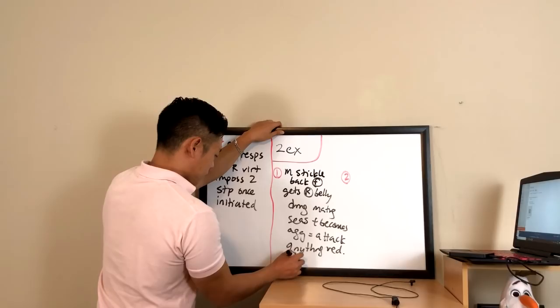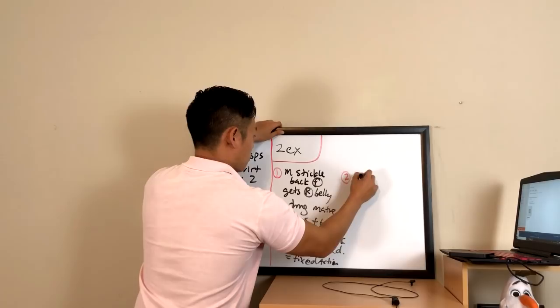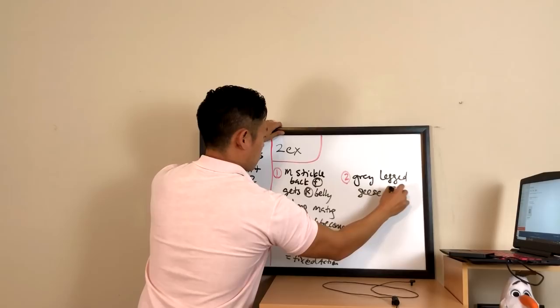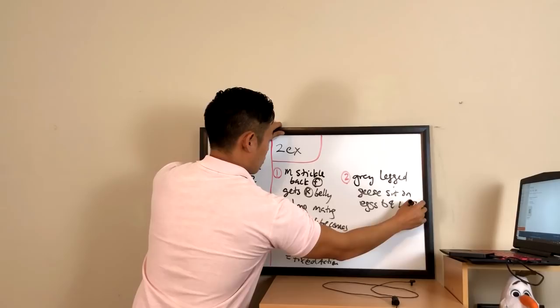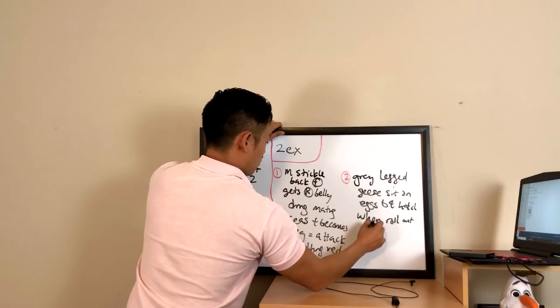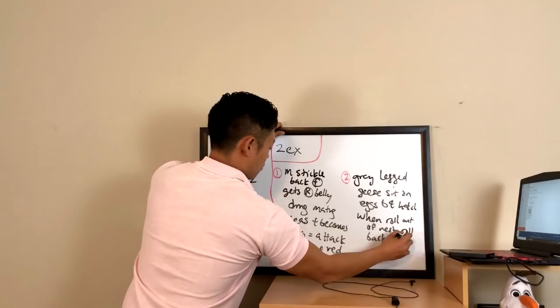The gray-legged goose provides another example of a fixed action response. These birds sit on their eggs before they hatch. However, sometimes an egg might roll out of the nest — the mother goose simply rolls the egg back into the nest with her long neck and beak. Now if someone takes the egg away, the goose will continue trying to push an imaginary egg back into her nest. Additionally, if there are any egg-like objects nearby — marbles, stones, or whatever — the goose will try rolling them into her nest as well.